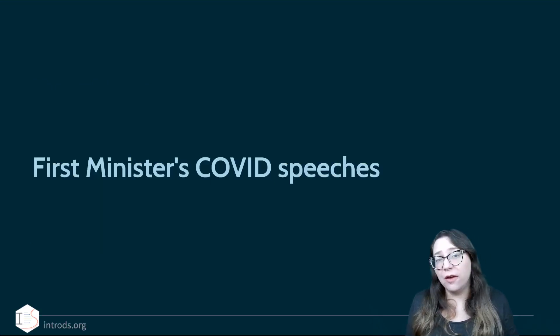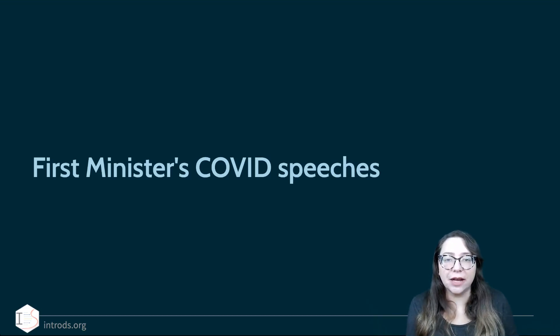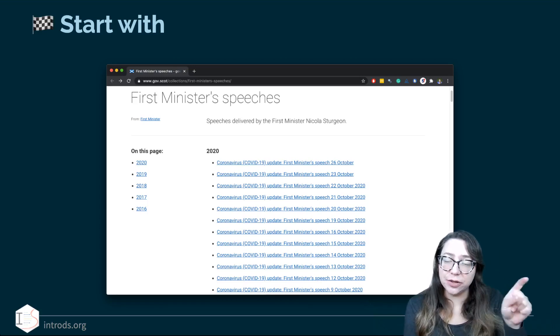The case study we'll work with for this is First Minister's COVID speeches. So since the beginning of the coronavirus lockdown back in March, Nicola Sturgeon has been giving periodic speeches either daily at the height of the lockdown or more recently multiple times a week, where she gives an update on the COVID numbers in Scotland as well as answer journalists' questions about them. So the data from these is actually on the ScottGov website. So if you go to this web page, you can see a link to each one of these speeches and within each one of these links there's information about the speeches like the text and where it was given and what the date was, so on and so forth.